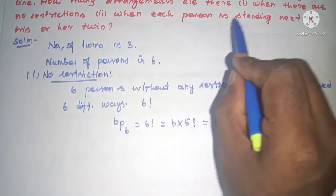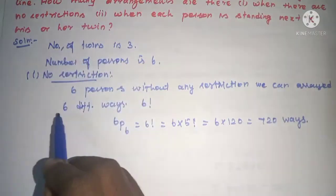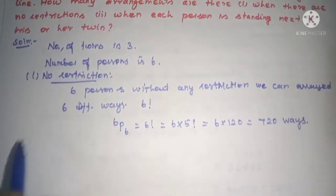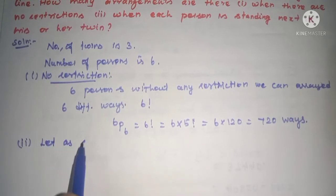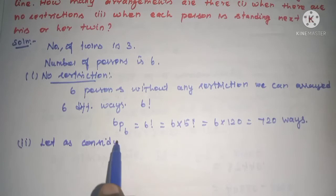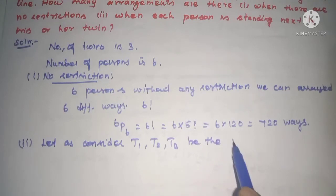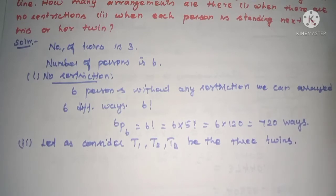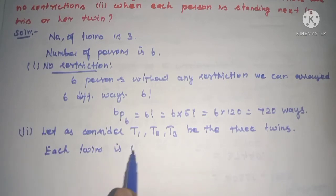Submission 2: Let us consider T1, T2, and T3 be the three twins. First, each twin is considered as a single unit.